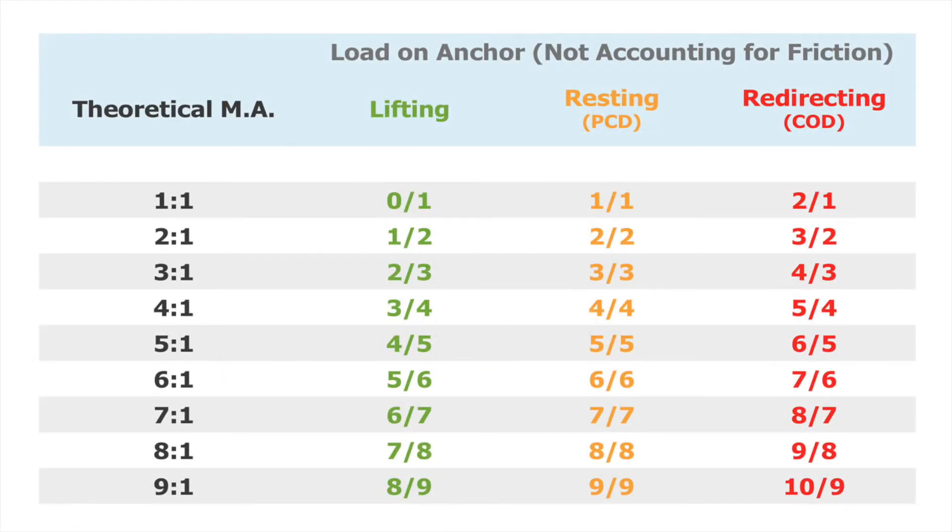Now let's talk about those fractions. A simple way to figure out the theoretical load on the anchor is to use the mechanical advantage as the denominator in a fraction. When the haulers are resting and the progress capture device takes all of the load onto the anchor, the numerator in the fraction will be the same as the denominator. When the haulers redirect the rope through a stationary pulley on the anchor and pull down instead of up, the numerator in the fraction will be the denominator plus one.